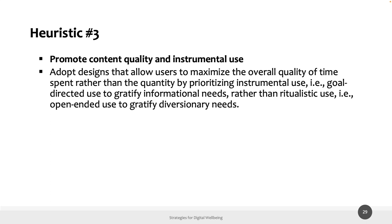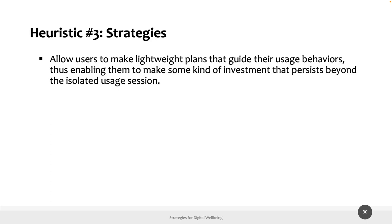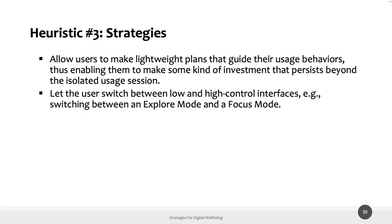Heuristic 3 is 'promote content quality and instrumental use': adopt designs that allow users to maximize the overall quality of time spent rather than quantity, by prioritizing instrumental use — usage sessions performed with a clear goal — rather than habitual or ritualistic use, like mindlessly scrolling a social network feed. Strategies include allowing users to make plans to guide their usage sessions, enabling a kind of investment that persists beyond the isolated session, and letting users switch between low and high control interfaces according to their intention.